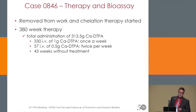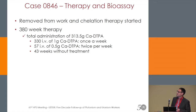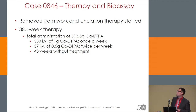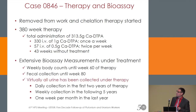The worker was removed from work and chelation therapy was started. It was a long therapy — 380 weeks, about seven years. In total, there was more than 300 grams of DTPA. Most of the dosage was one gram DTPA per week. There was a period where they did twice a week at half a gram DTPA, and there were some weeks without treatment. What makes the case special is you have a huge data set.